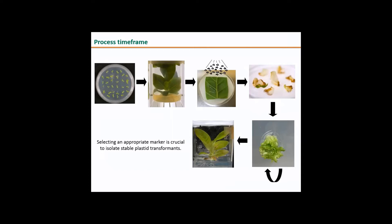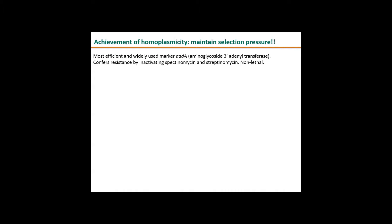After a few weeks you can transfer to routine media and get your plants that you'll eventually put in soil and start analyzing. The entire process could take up to two, three, four, five months depending on what you're transforming. The most efficient marker we have for chloroplast transformation is AADA, which codes for aminoglycoside 3-adenyl transferase. It confers resistance by inactivating spectinomycin and streptomycin. It's a non-lethal marker, which is very important for the selection process. It's also a non-autonomous marker, and I like to highlight that because a lot of people have trouble with this technique.